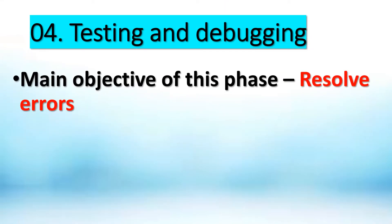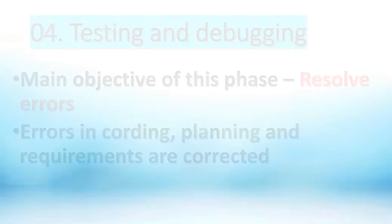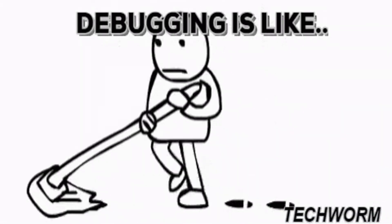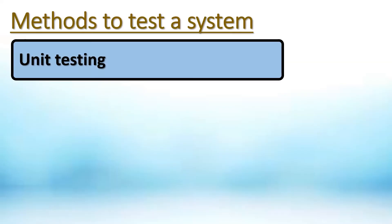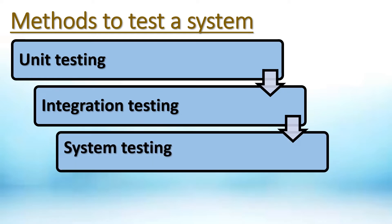Testing and debugging: the main objective of this phase is to resolve errors. Errors in coding, planning, and requirements are corrected. Methods to test the system include system testing, integration testing, unit testing, and acceptance testing.